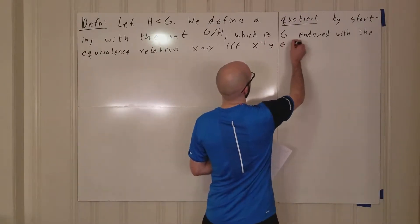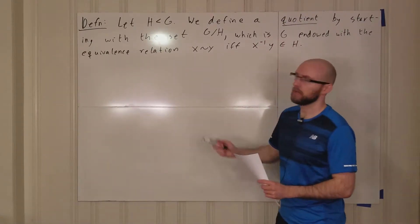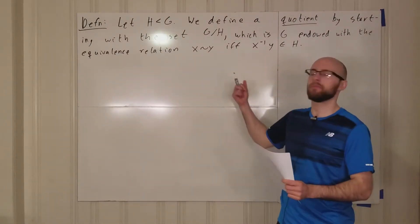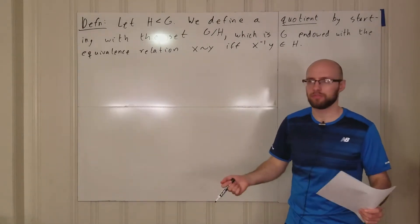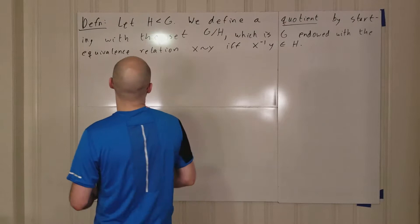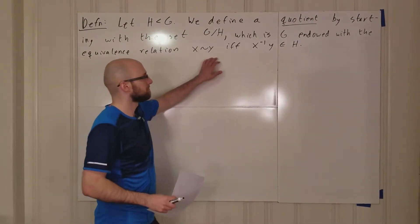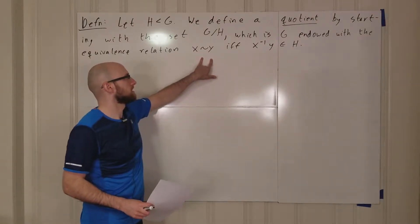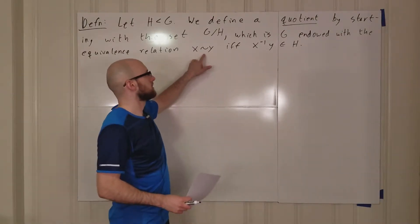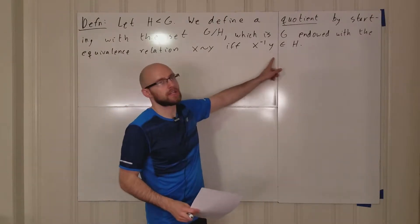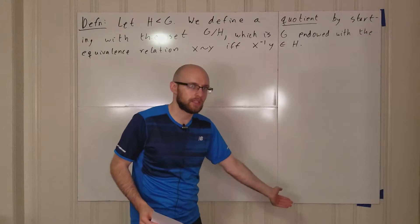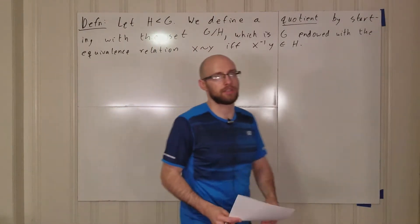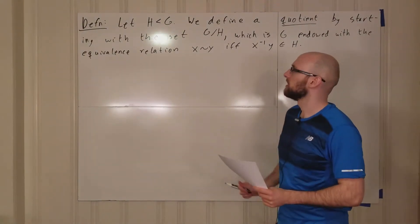I say this is an equivalence relation, but whenever I say something without proving it you shouldn't believe me. What about x being equivalent to x? Well, x is equivalent to x if and only if x inverse x is in H, but x inverse x is E, the identity element. Since H is a subgroup, we know it contains the identity element, so that holds.